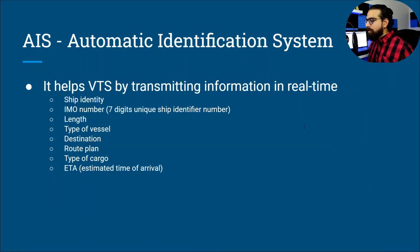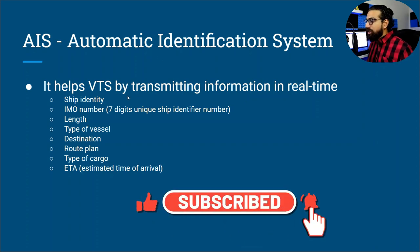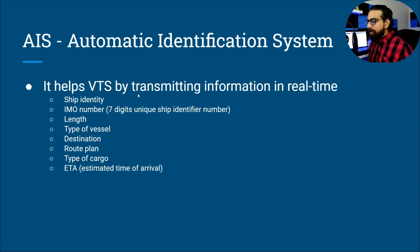Similar to the ADS-B system in aircraft, ships utilize AIS — the Automatic Identification System. AIS helps the VTS, or Vessel Traffic Service, by transmitting vessel information in real time. It helps with overall traffic management, navigation, collision avoidance, and facilitates search and rescue missions.